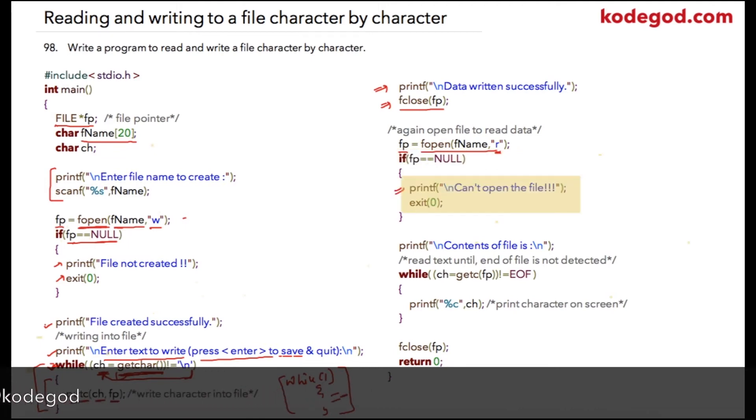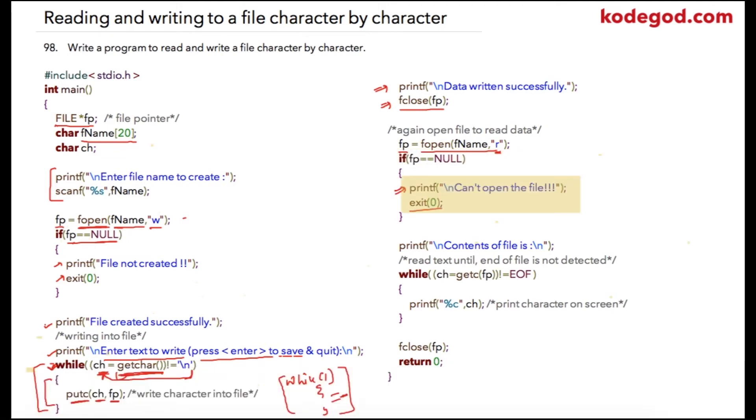But as we have created the file in the previous function itself the file will be present as we are using the same file name. So in the next printf statement I am printing content of the file and in the next line I am going to write while loop and I am going to again read character by character but this time from the file.